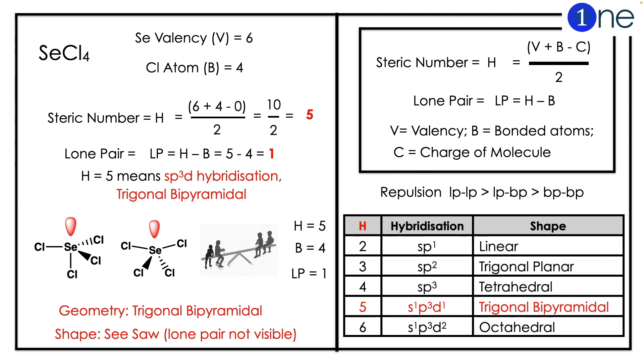If you substitute in the formula, selenium valence is 6, chlorine atoms is 4, so the steric number will be 5. The lone pair equals H minus B, which equals 1. So H=5 means sp³d hybridization, which is trigonal bipyramidal.